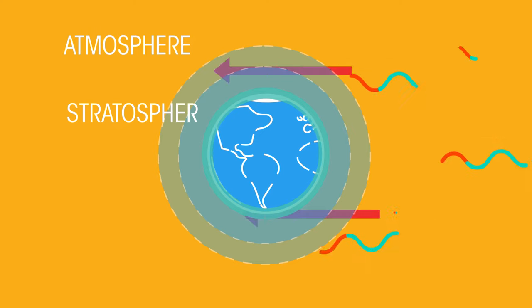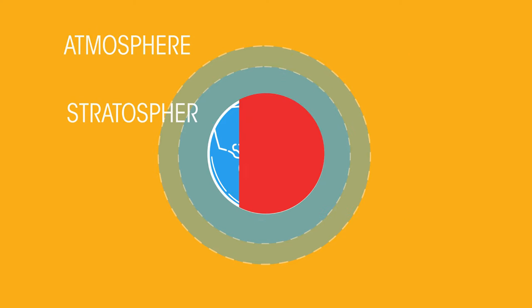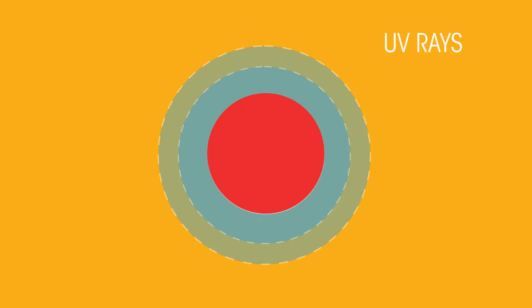If there was no magnetic field, the solar wind would strip away the Earth's atmosphere, leaving the Earth's surface exposed to the damaging UV light rays from the Sun.